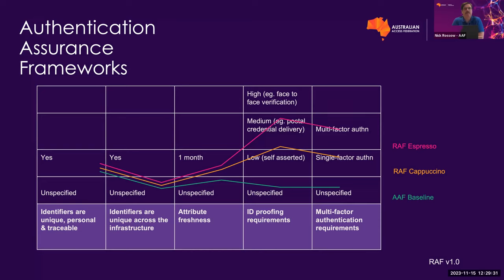To touch back on the authentication framework — the assurance levels that some services require. It's a kind of choose-your-own-adventure: services can choose how high a level of certification or assurance their individual users must meet before accessing their services. The AAF baseline is along the bottom. What the AAF is doing over the next couple of years is looking at how we can raise that level of assurance where services require it. That's why we thought it would be great to have a chat to the sensitive data interest group to work out what use cases we can tap into.